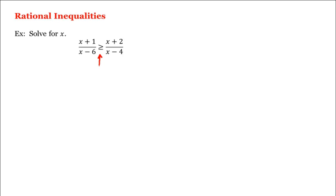Now if this were an equality instead, we would cross multiply. However, we cannot do that here because we do not know x, and hence we don't know whether these expressions are positive or negative. And remember, when you multiply both sides of an inequality by a negative number, that inequality sign will flip. So since we do not know whether we're multiplying by a negative number, we cannot do that.